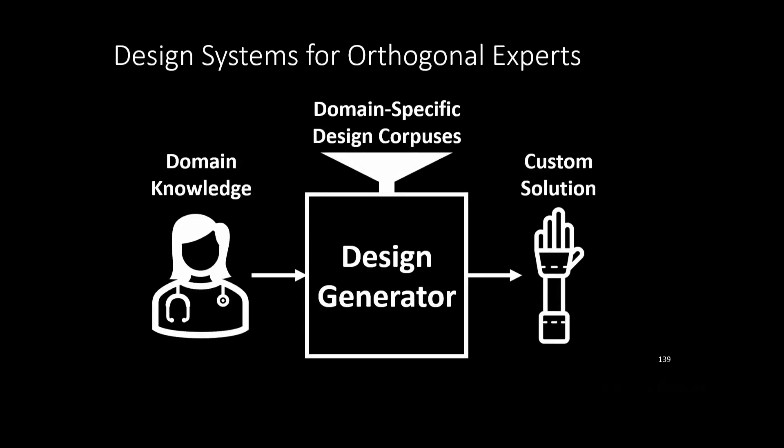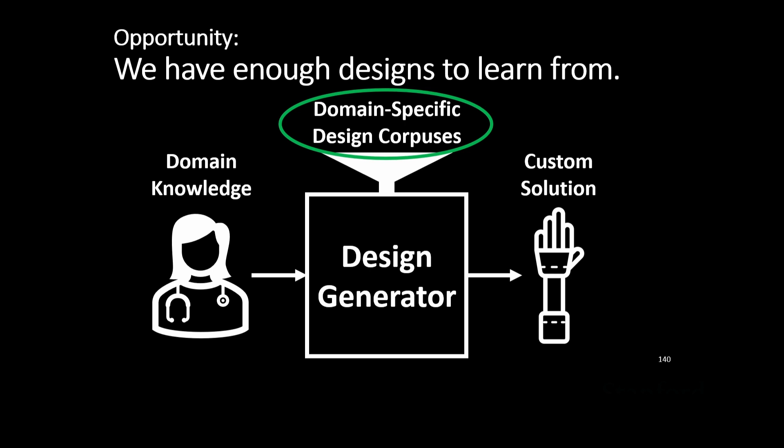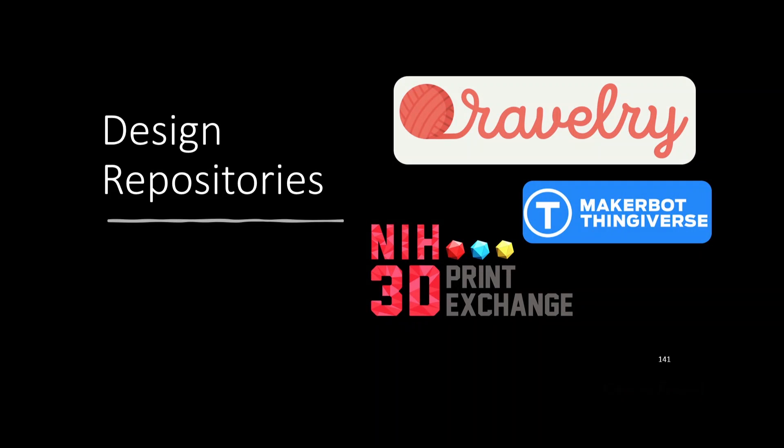Domain knowledge from the expert feeds into a generator to get a customized design, with that generator created from domain-specific design corpora. We have a real opportunity now that we didn't have five years ago — these corpora are getting bigger, better, and more specific: Ravelry for machine knitting, Thingiverse for general 3D printing, and the NIH 3D Print Exchange with already-reviewed clinical designs. This lets us leverage deep learning techniques being used for generating text and images and expand them into the fabrication space, though this opens new challenges.